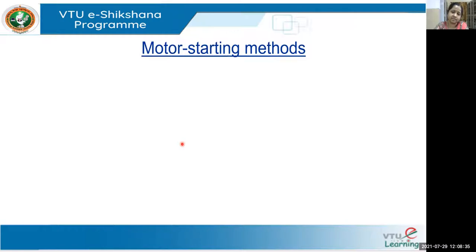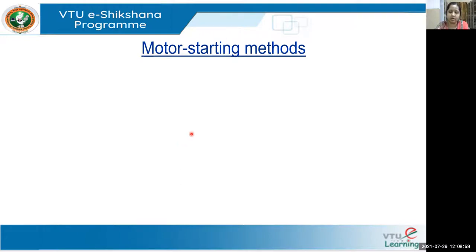So what are the different starting methods? These starting methods are used basically to control this starting inrush of current. In this particular lecture, we are going to talk about three different methods: resistance and reactance method, part winding method, and star delta method.